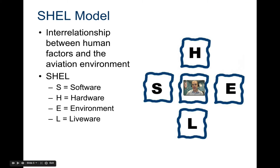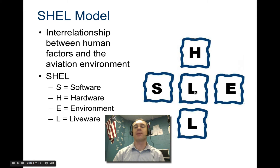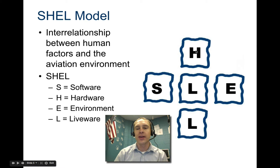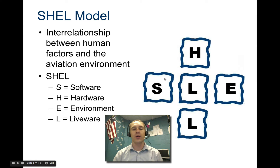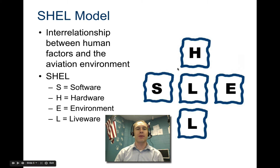If something happens to the liveware, there is going to be a problem between you and the software, between you and the hardware, between you and your environment, and between you and other people like the co-pilot. If something happens to you, you've got a big problem. If something happens to the hardware, its only interaction generally may be just with you. If something is wrong with the environment outside — like a thunderstorm — that's something you have to deal with, but the hardware and software may not be immediately impacted.